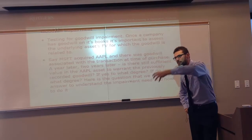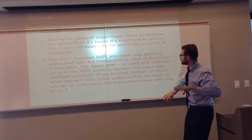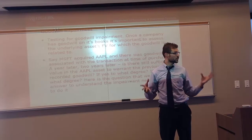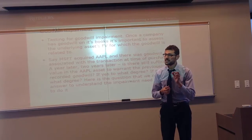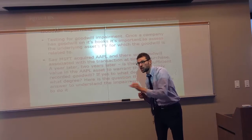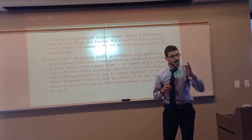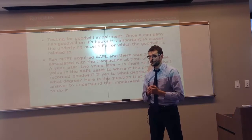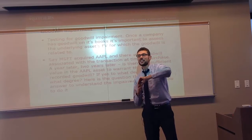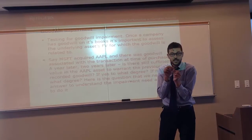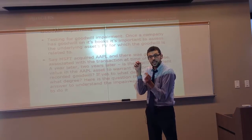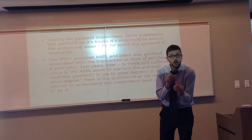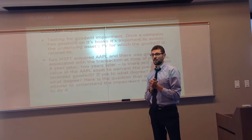If the goodwill has been impaired, then you have to write it down. Say you acquired Apple and it's now two years down the line — you examine to see what the value of Apple currently is. If the value has declined, you proceed to make a valuation to get an exact value. If that value indicates a goodwill — in other words, a fair value excess — that is now less than the excess you recorded before, you record an impairment for that difference.